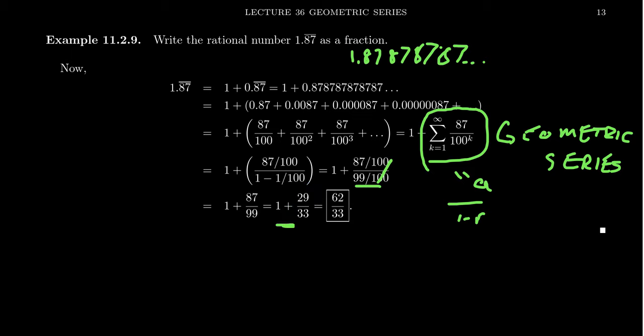There's a common factor of 3 between 87 and 99. Writing this mixed number as an improper fraction, we get 62 over 33. So using this geometric series formula, one could write any repeating decimal as a rational number. We can find a specific fraction which gives us that repeating decimal.